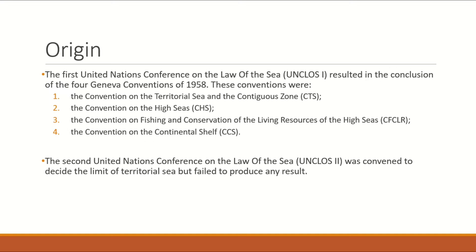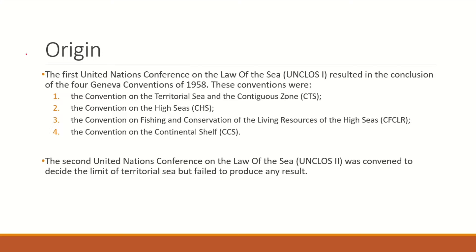After this proclamation, the United Nations Conference on the Law of the Sea, UNCLOS-1, was convened. Due to this conference, four conventions were formulated: 1. The Convention on the Territorial Sea and the Contiguous Zone; 2. The Convention on the High Seas; 3. The Convention on Fishing and Conservation of the Living Resources of the High Seas; and 4. The Convention on the Continental Shelf. UNCLOS-1 was followed by UNCLOS-2 to decide the territorial sea limit, but there was no concrete decision.